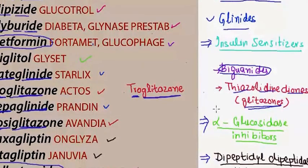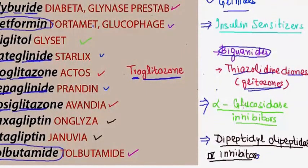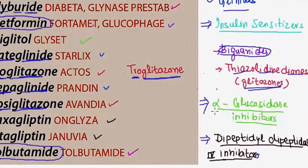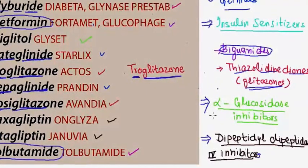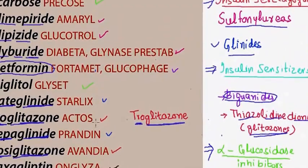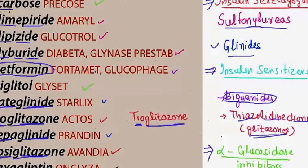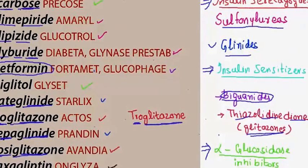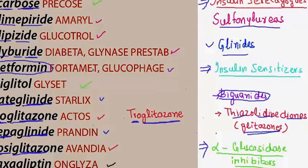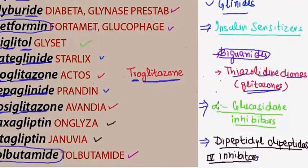Then we have alpha-glucosidase inhibitors. In the alpha-glucosidase inhibitors we have two drugs: number one is acarbose, and the second one is miglitol. These are the alpha-glucosidase inhibitors.